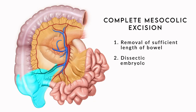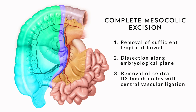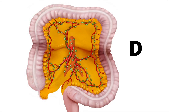Complete mesocolic excision, or CME, as first defined by Werner Hohenberger, is defined by three key principles: adequate longitudinal bowel resection, meticulous dissection along embryological planes, and central vascular ligation and excision of D3 central lymph nodes. Mesocolic lymph node stations are divided into three groups by the Japanese Society for Cancer of the Colon and Rectum Classification System.